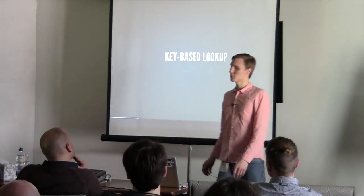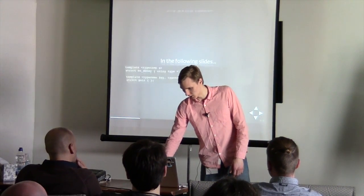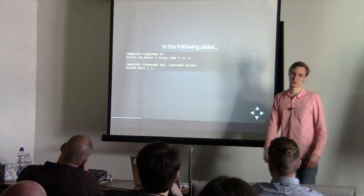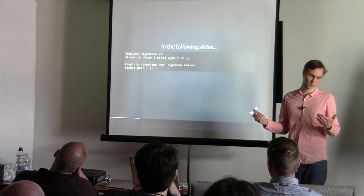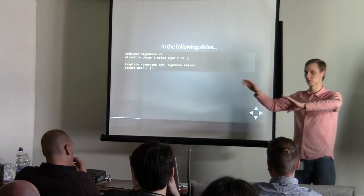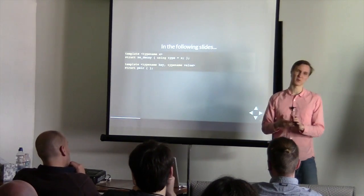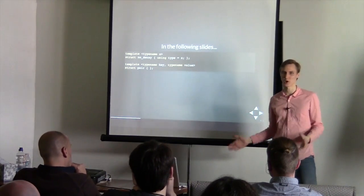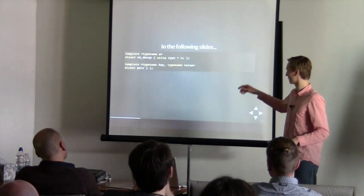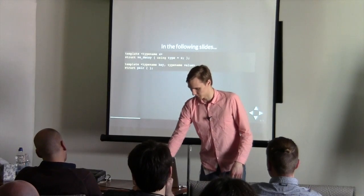Now: key-based lookup for implementing type maps, compile-time maps. In the following slides we'll need no_decay, which is basically a minimal wrapper to avoid problems if I want to return a type and use decltype — for example if it's a function type or void, there will be problems. So we just wrap it with no_decay and extract the type inside. And a pair, just needed for pattern matching later.